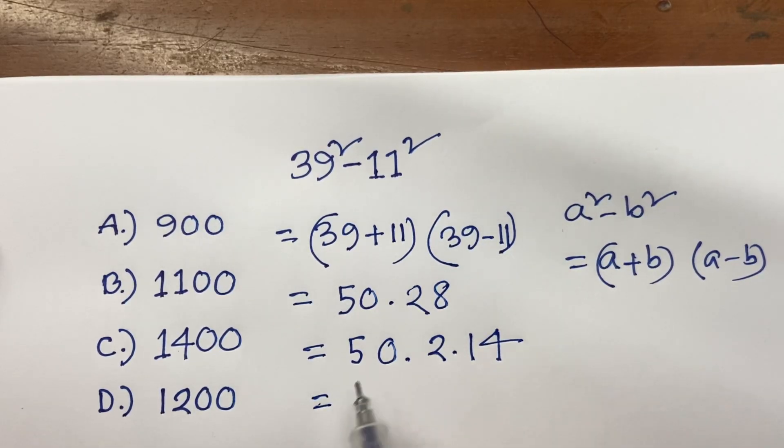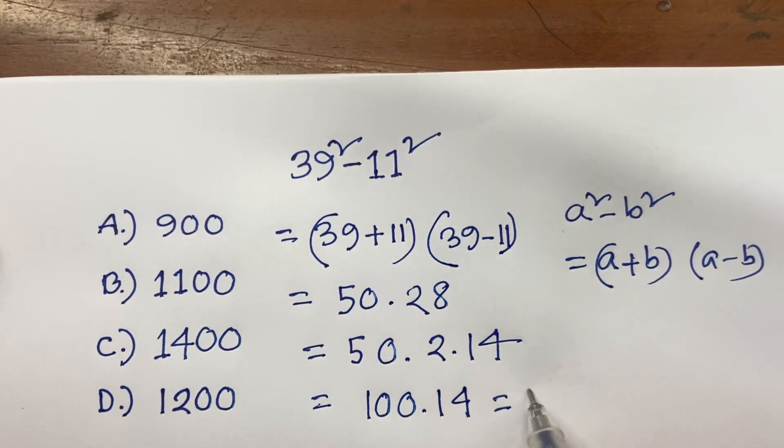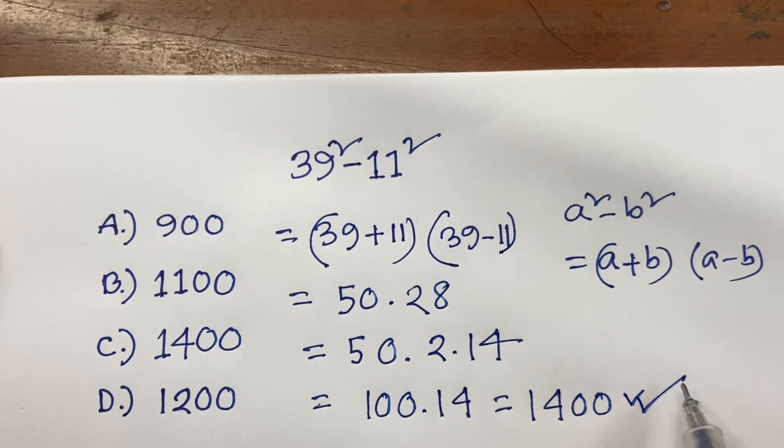Now you know that 50 times 2 is equal to 100, and here is 14, and I can say 14 times 100 equals 1400. This is our answer.